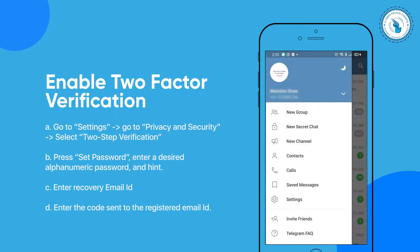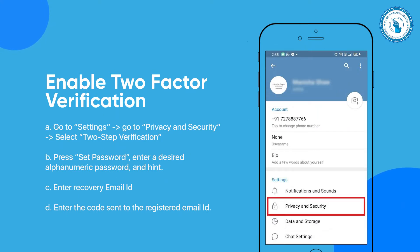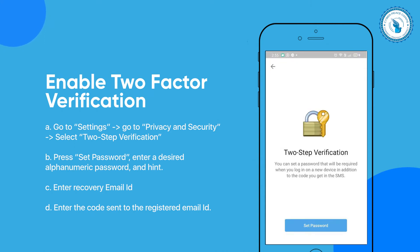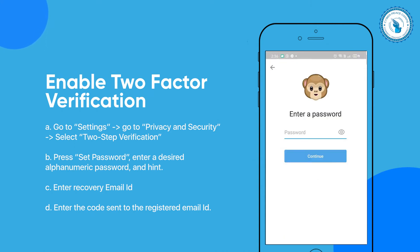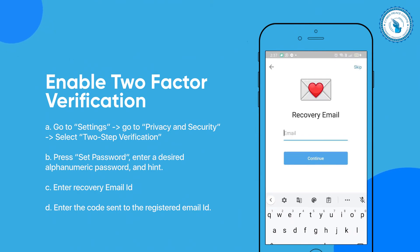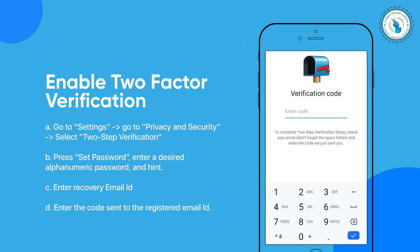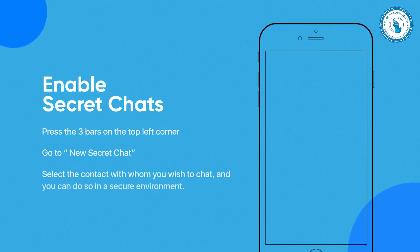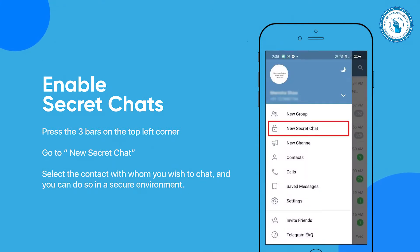Enable two-step verification: go to Settings, go to Privacy and Security, select Two-Step Verification, press Set Password, enter a desired alphanumeric password and hint, then enter your recovery email ID and the code sent to the registered email ID.